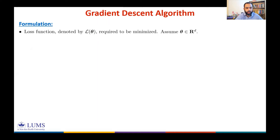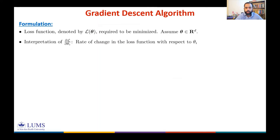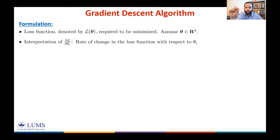We denote the loss function by L(θ), where θ is in d-dimensional space. The partial derivative of the loss function with respect to some component θᵢ gives the rate of change in the loss function with respect to θᵢ.